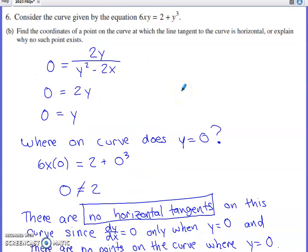Part B says find coordinates of a point on the curve where the line tangent to the curve is horizontal, or explain why no such point exists. You're going to have a horizontal tangent line when your derivative is equal to 0. When is that derivative equal to 0? This fraction can only ever equal 0 when the numerator is 0 and the denominator is not. So when is the numerator 0? That's going to happen when Y is 0.